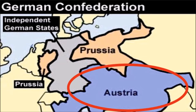The German Confederation was presided over by Austria as decided at the Vienna Congress. The Austrian ruler did not show much interest in Germany but at the same time opposed the spirit of nationalism in Germany, and did not allow the German Confederation to become powerful, always trying to keep Germany weak and divided.